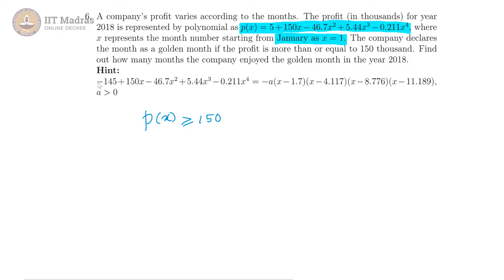And there is a hint also given to us, where this quartic is apparently equal to, so they have basically given us the roots of the polynomial and a does not matter, a is greater than 0. So we can also tell what a is, a has to be minus 0.211.